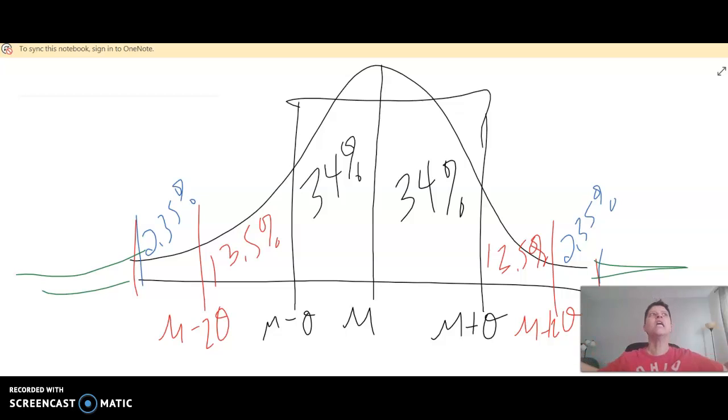Very, very, very unlikely to end up in those tails, 0.3%, that's very small. So this is 0.15% because, again, we are talking symmetrical, right? The normal curve is perfectly symmetrical.